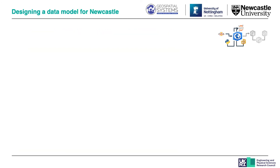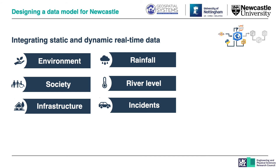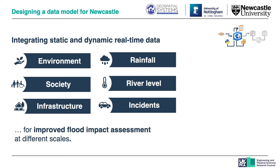We designed a database model for Newcastle for the analysis of different scenarios. Therefore, we integrate static data. Data sources include the environment, society and infrastructure. Based on the environmental data, we can identify impacted agricultural areas and crops. Data on society helps us to identify vulnerable population groups such as one-person households, elderly people and densely populated areas in general. We use data on infrastructure to identify flooded buildings, estimate their financial damage and show further impacted roads and bus stops. We further show how we can include real-time data into our database model. Data sources comprise rainfall, river level measures and traffic data on incidents and accidents. Combining both static and dynamic data, we aim to improve the flood impact assessment at different scales for Newcastle.